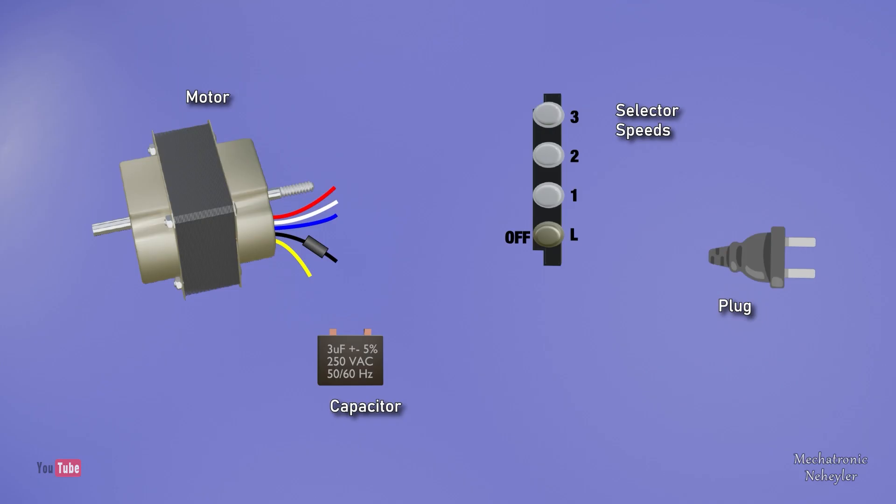Let's see an electrical connection diagram between all these components. Shown here is the motor with the five cables, the gear selector, and the plug.